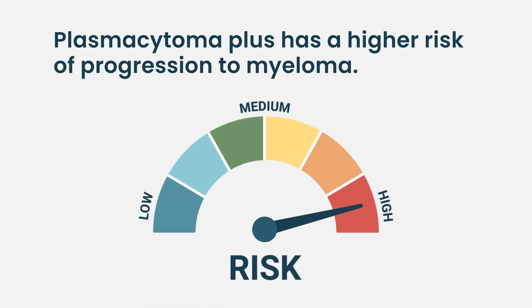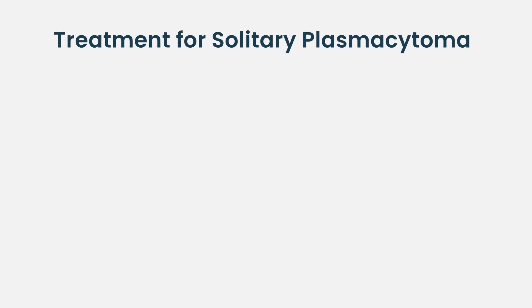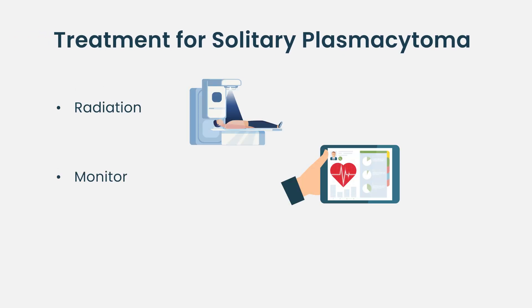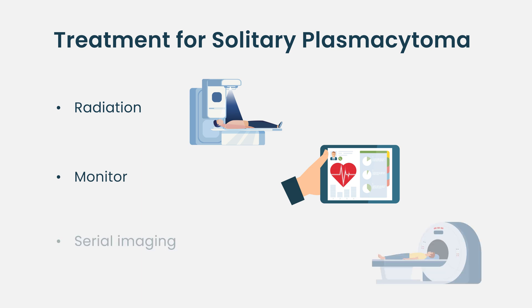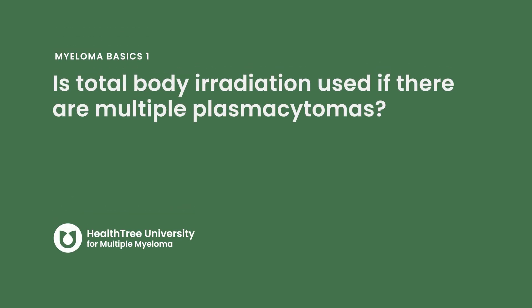The difference between solitary plasmacytoma and plasmacytoma-plus is that there's a higher risk of progression to myeloma with plasmacytoma-plus, as one might expect when there's already evidence of disease in the bone marrow. Right now both are treated the same way. After radiation, we monitor closely — I typically see patients every three months with serial imaging studies, especially during the first couple of years when the risk of progression to multiple myeloma is highest.